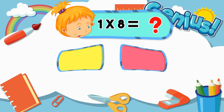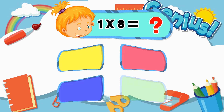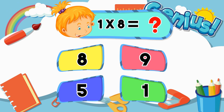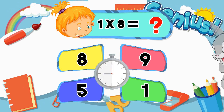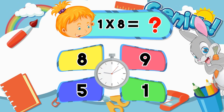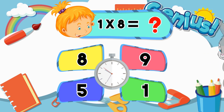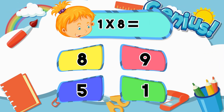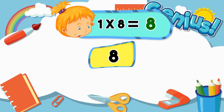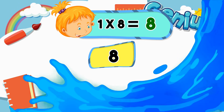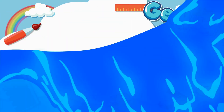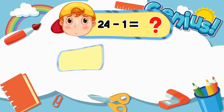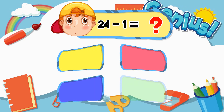What is 1 times 8? 27. 5. 28. 9. 33. One, eight. What is 24 minus 1?